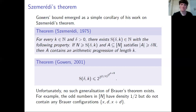Unfortunately we don't have a density version of Brouwer's theorem. This is due to the fact that the odd numbers have density one half, however any progression in the odd numbers must have an even common difference — this comes from the fact that if you add two odd numbers together you get an even number. Nevertheless, the methods that Gowers introduced are very helpful for this line of inquiry.